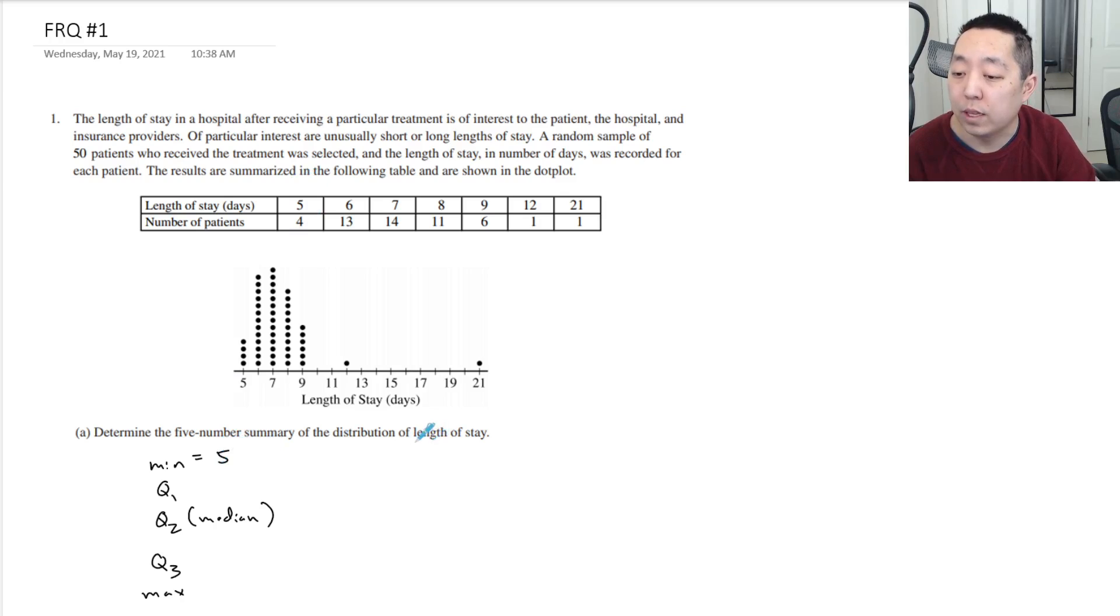The distribution of the length of the stay. So you're doing not the number of patients, but the lengths. Okay, so Q1 is the first quartile. Now we have a total number of 50 patients. That means each quartile, each 25% is going to be 50 over 4, which is 12.5 people.